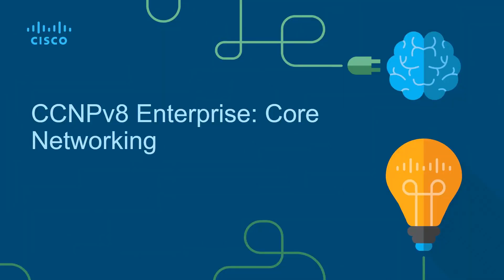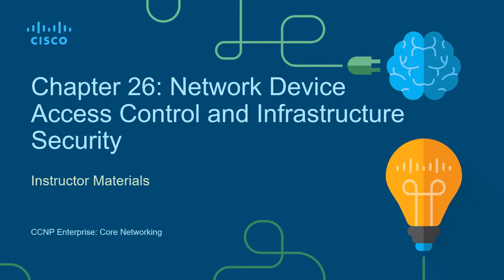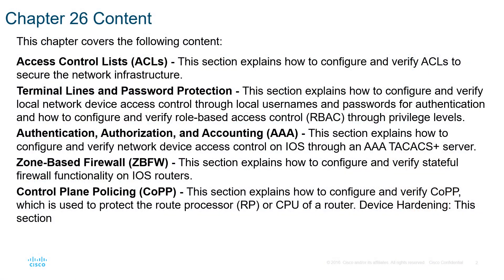Welcome. In this video we are looking at the CCNP version 8 curriculum Enterprise focusing on core networking. This is the first of two video series, focusing on ENCOR Chapter 26: network device access control and infrastructure security. The big takeaways are access control lists, terminal line protections, password protection, AAA, firewall options, and control plane policies. We also have a good amount of labs in this module.